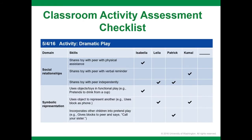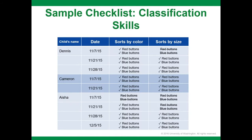For example, a checklist placed in the dramatic play area allows the teaching team to easily document abilities children demonstrate in the domains of social interaction and symbolic representation. Another checklist was placed on a table where a small group classification activity was set up each week, designed to measure children's classification skills — part of the mathematics knowledge and skills domain from the Head Start framework. The teacher uses buttons of different sizes and colors to monitor if children can organize them by size and color, checking the item when correct and putting a line through it if incorrect.